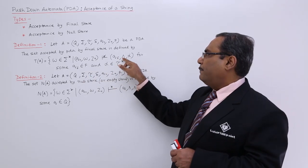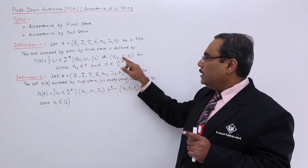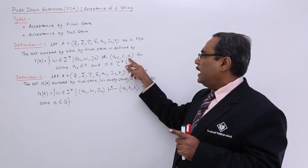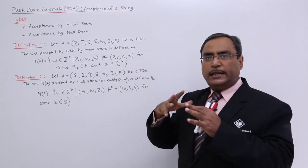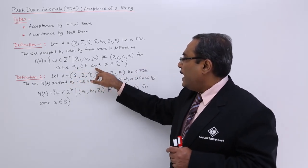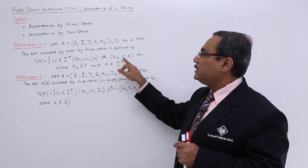The pointer has gone beyond the input string, and alpha means the pushdown store symbols collection, for some QF belongs to F and alpha belongs to τ*. That is definition number 1.